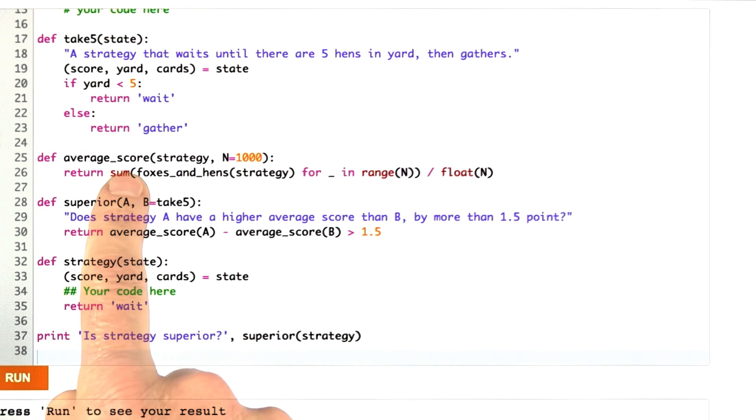Now here's a function for computing the average score of a strategy over n number of games where n defaults to 1,000. And what I'm asking you to do is to write your strategy function, strategy function here that takes a state and does whatever you want. Here I've had it just return something, but you should alter your code to do the right thing. And we want you to make sure that your strategy is superior. And what does superior mean? It means that your strategy's average score compared to the average score of take 5 must be 1.5 points better on average. So keep working on your strategy until you can come up with one that's superior. If you want, you can try to figure out how to define the optimal strategy, but you don't need to do that as long as you beat take 5 by 1.5 points.